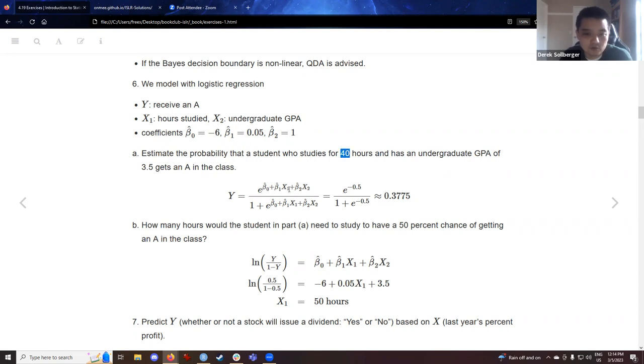We could address tasks such as estimate the probability that a student who studies for 40 hours and has an undergraduate GPA of 3.5 gets an A. We plug in 40 where x1 was, we plug in 3.5 where x2 was, and the coefficients as mentioned in the fit. So a 3.5 student who studies 40 hours, we're anticipating about a 38% chance for the student to receive an A under this model. Maybe 38% doesn't sound all that optimistic.